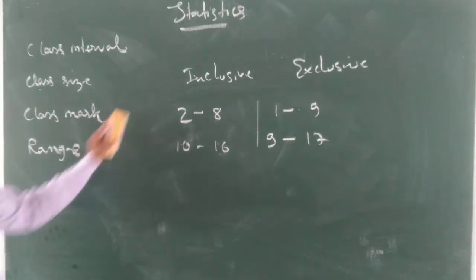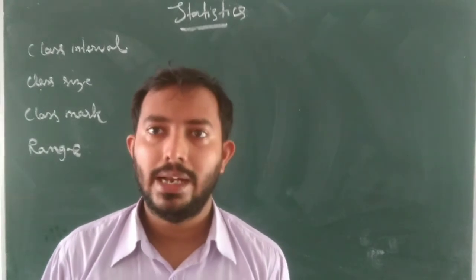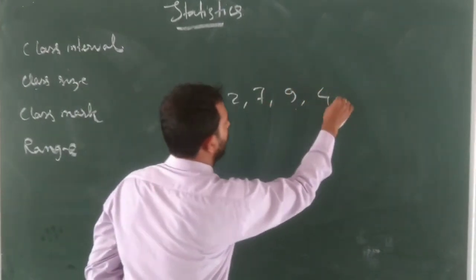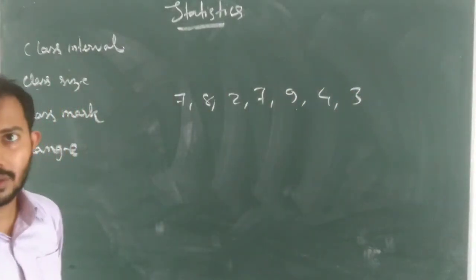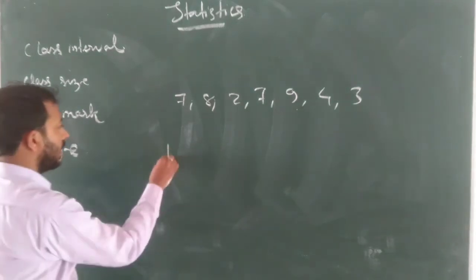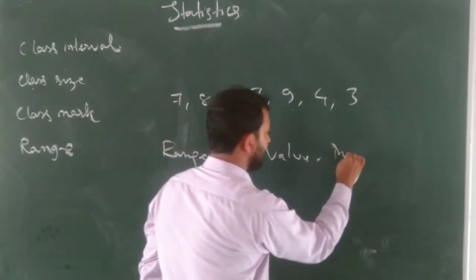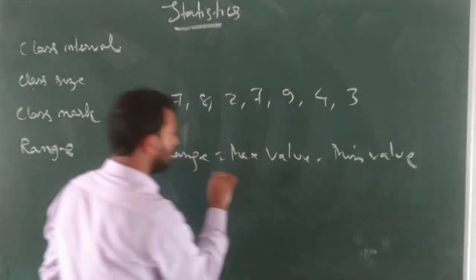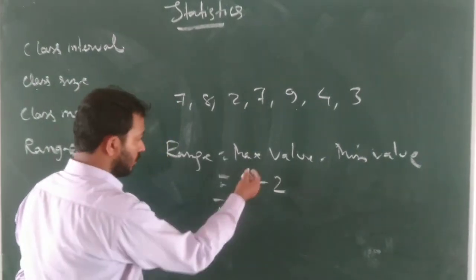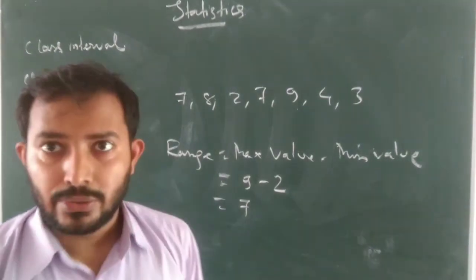Now, range. Range is: maximum value minus minimum value — the difference between the maximum and minimum values. If the data is 7, 8, 2, 7, 9, 4, 3, find the range. Maximum value is 9 and minimum value is 2. So the range is 9 minus 2, which gives 7. Thank you very much.